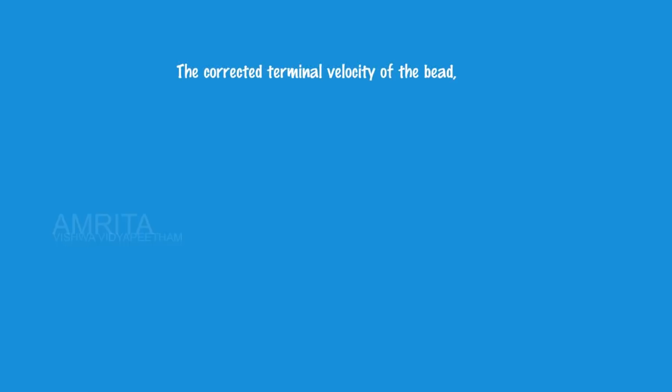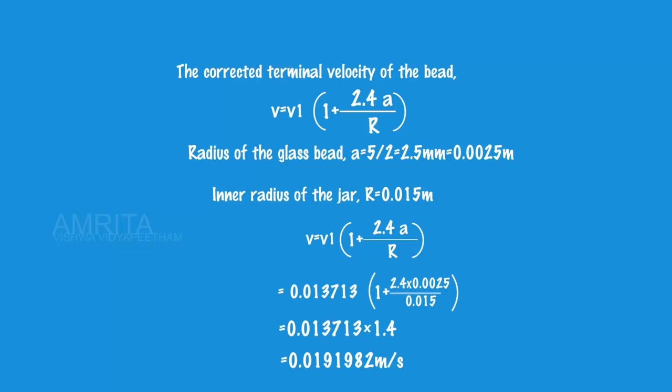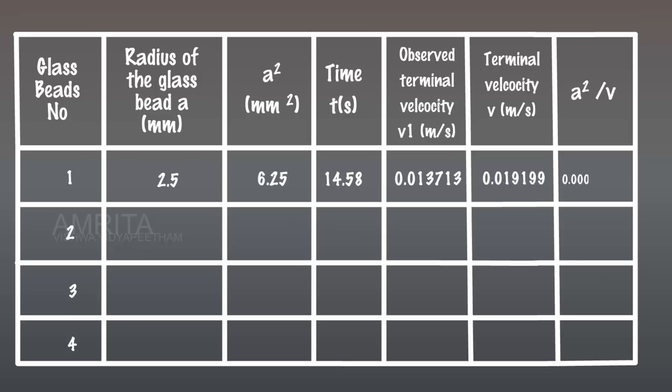The corrected terminal velocity of the bead can be calculated using the relation V = V1(1 + 2.4A/R). Here, the radius of the bead A = 5/2 = 2.5 mm = 0.0025 meters and the inner radius of the jar R = 0.015 meters. Then the corrected terminal velocity is V = 0.0191982 meters per second. Record the value in the tabular column.